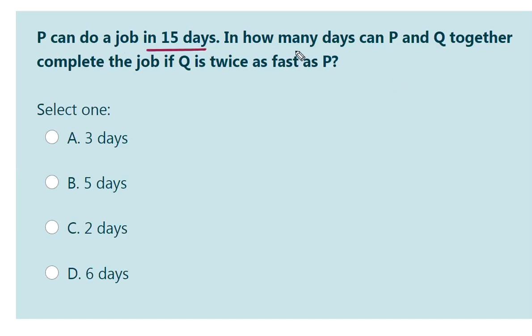P can do a job in 15 days. In how many days can P and Q together complete the job if Q is twice as fast as P?